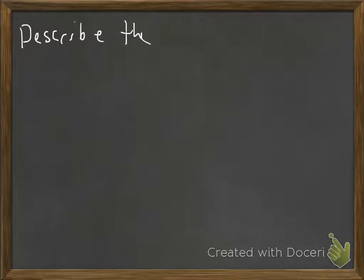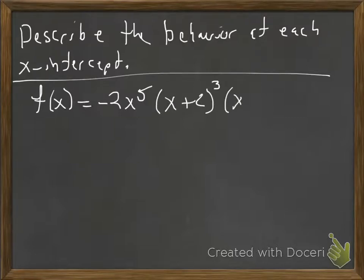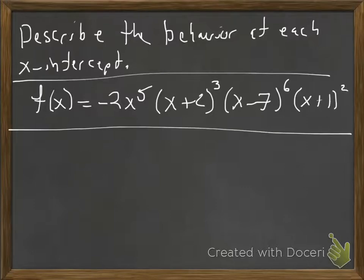So here we're just going to ask you to describe the behavior at each x-intercept. So we'll give you some polynomial function. Negative 2x to the 5th, (x+2) cubed, and (x-7) to the 6th, and (x+1) squared.